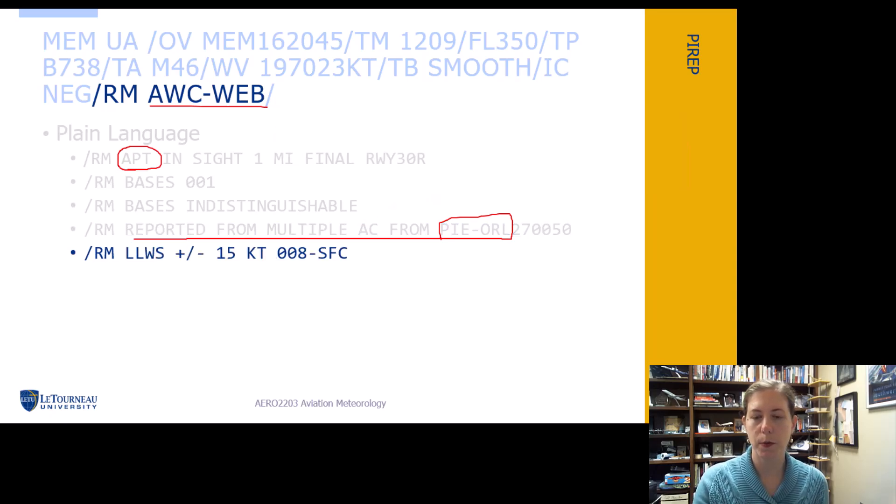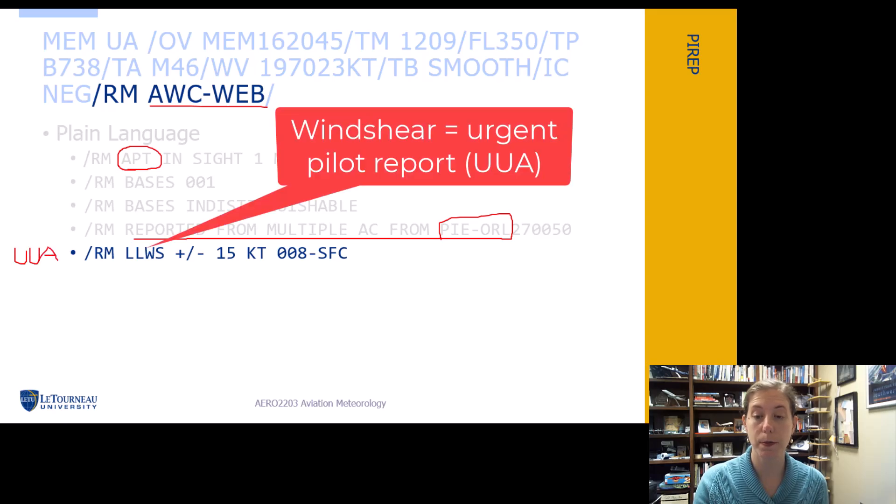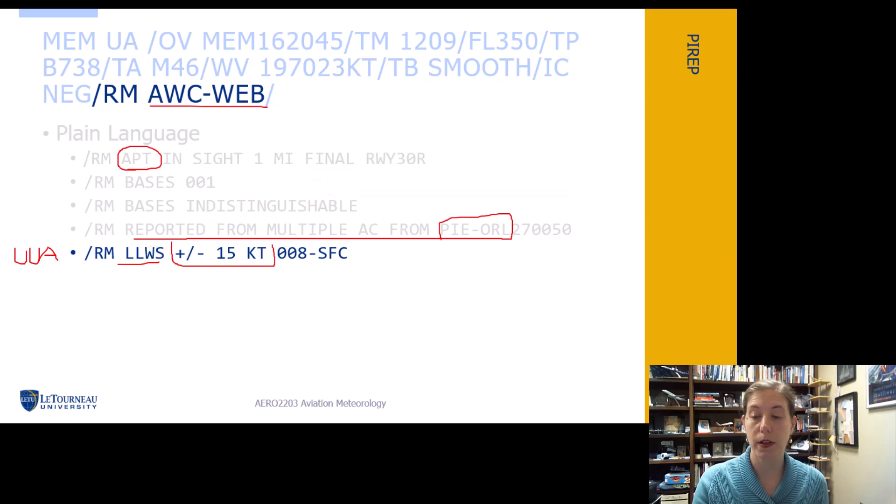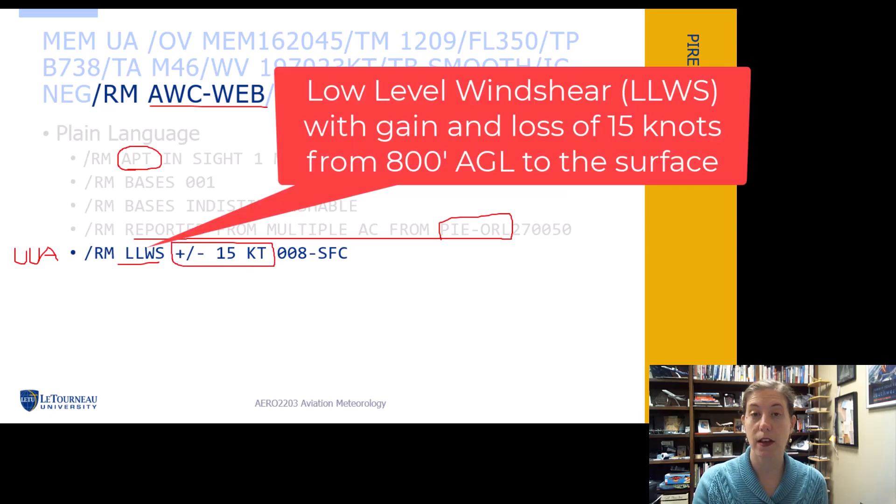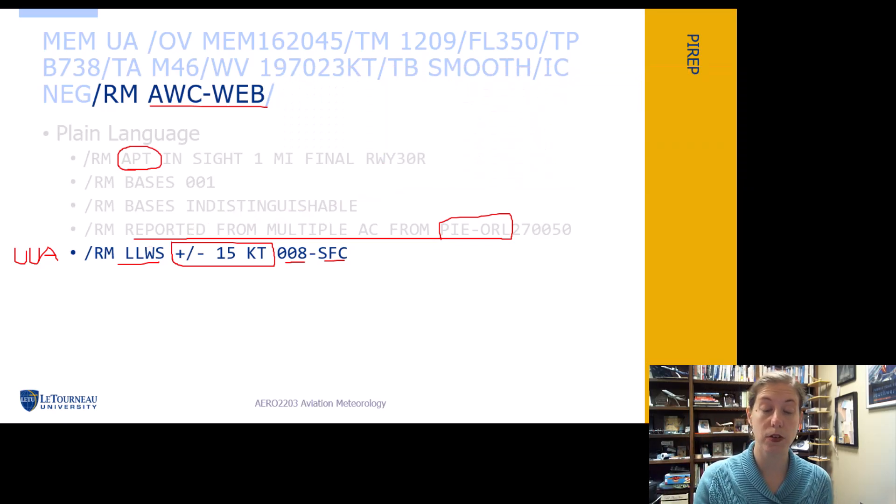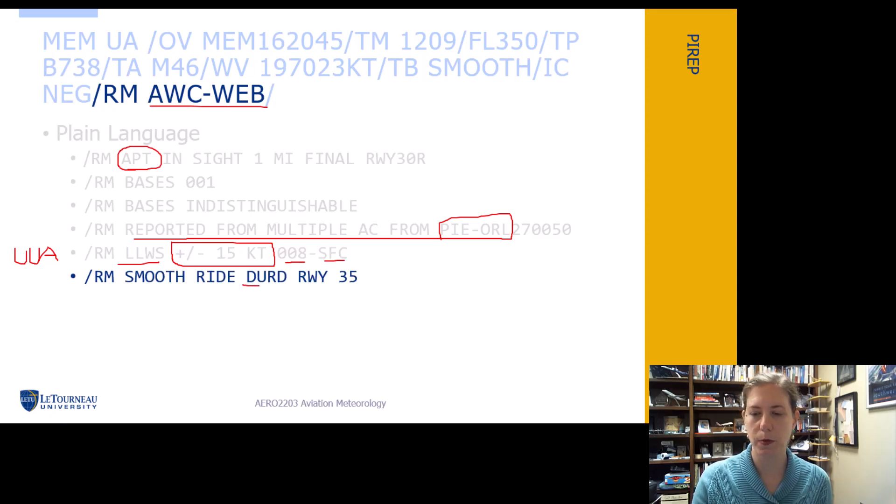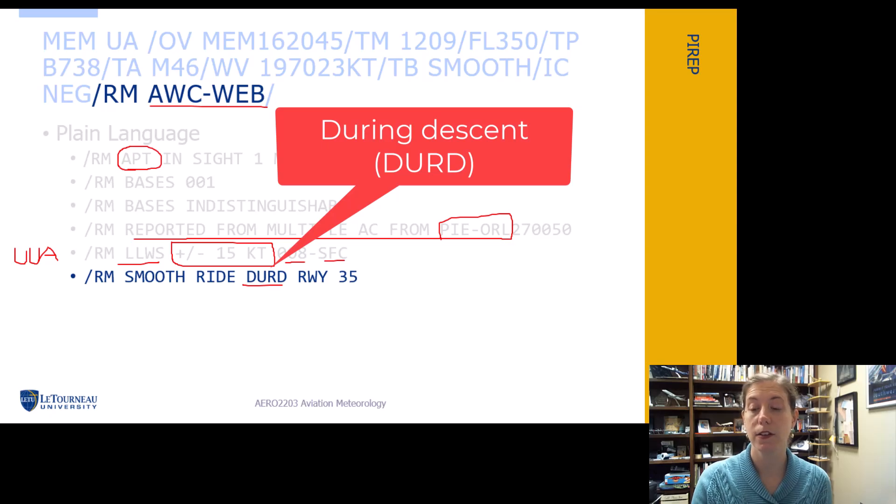Here's one that would probably qualify as a UUA, an urgent PIREP. Low level wind shear, and they had a plus or minus 15 knots. So they had a 15 knot airspeed fluctuation from 800 feet MSL all the way to the surface. That's a type of PIREP that's going to show up as an urgent PIREP. Smooth ride, and then with one of our abbreviations again, during descent to runway 35.